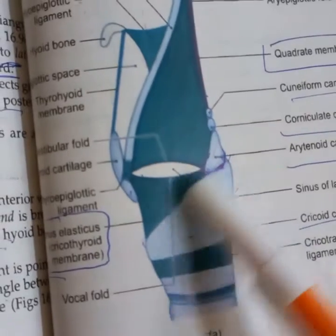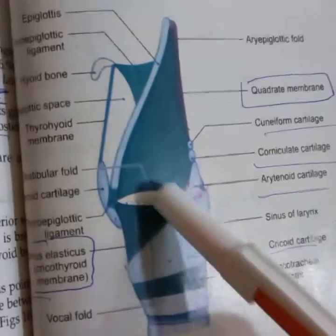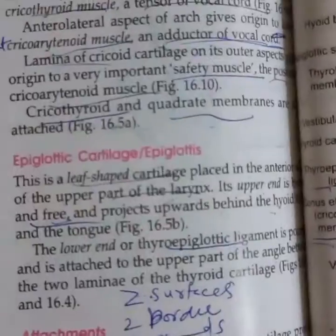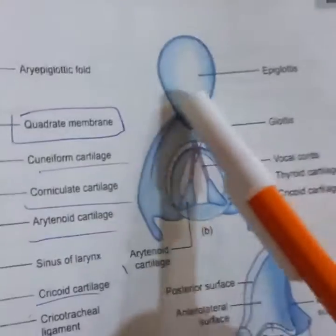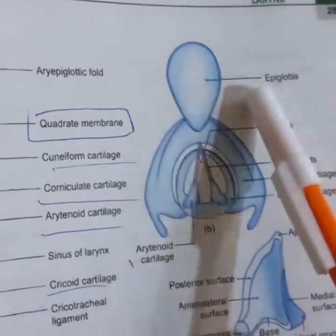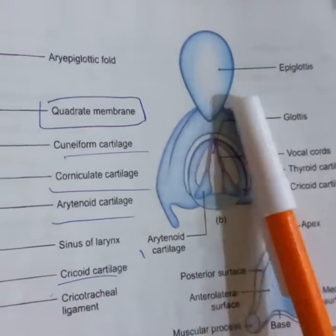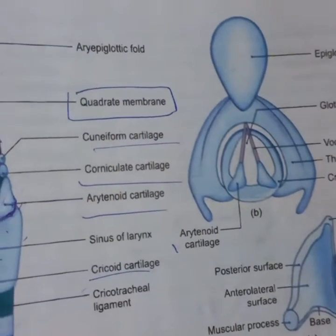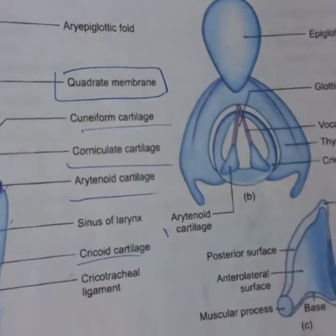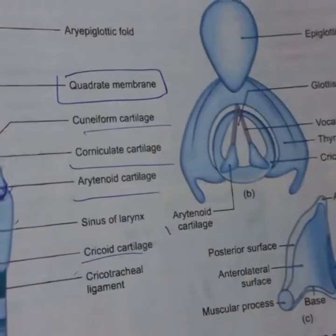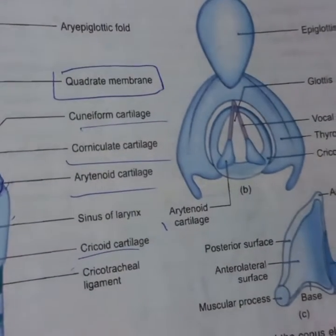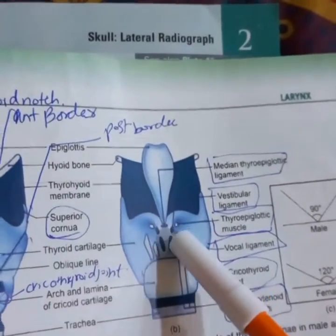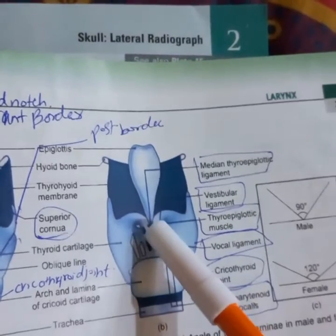In a cut section, we can see the conus elasticus and the quadrate membrane. The epiglottis is leaf-shaped and is present in the upper part of the larynx, lying behind the hyoid bone and the tongue. It is connected by the thyroepiglottic ligament to the two laminae of the thyroid cartilage, and the thyroepiglottic muscle is present here.